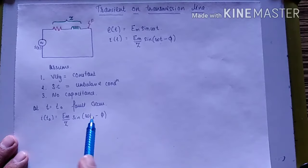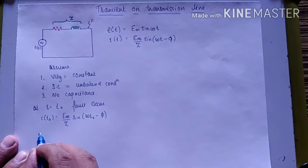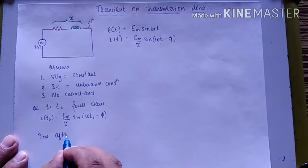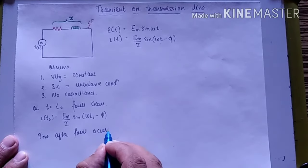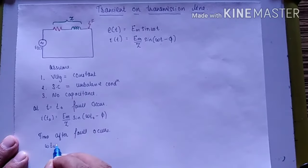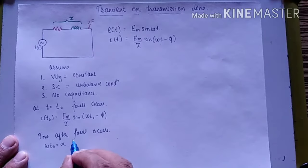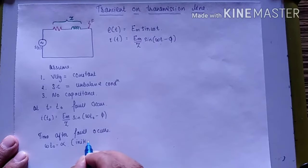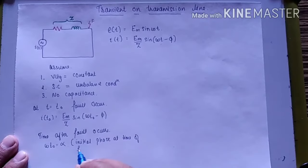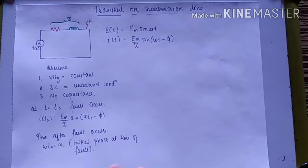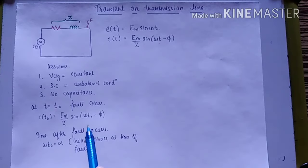For the time after the fault occurs, we define α as the initial phase at the time of fault, where ωt₀ = α. So the value of ωt₀ is equal to α.